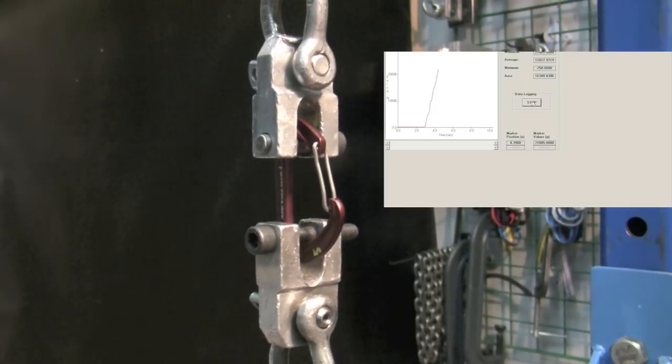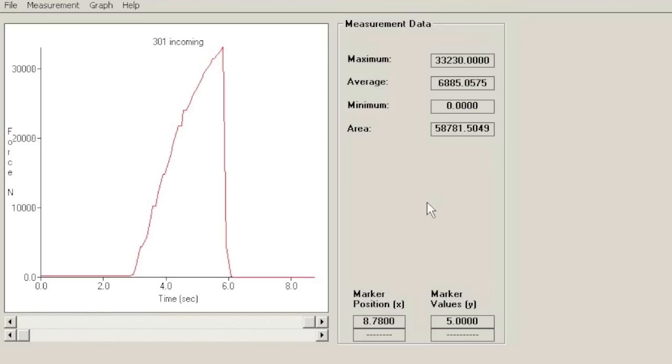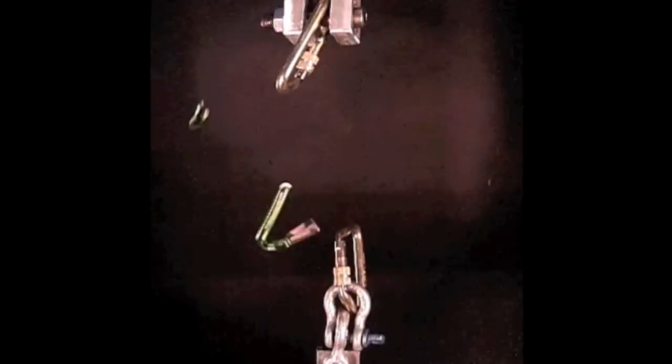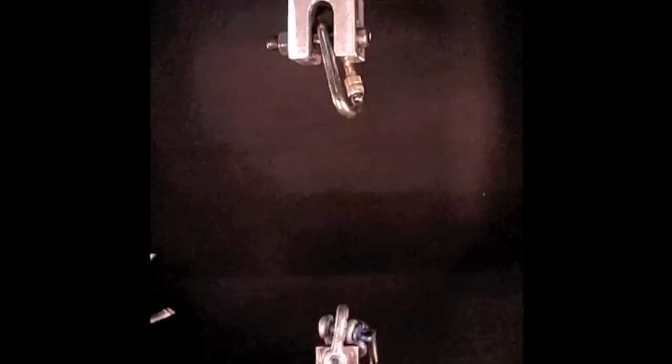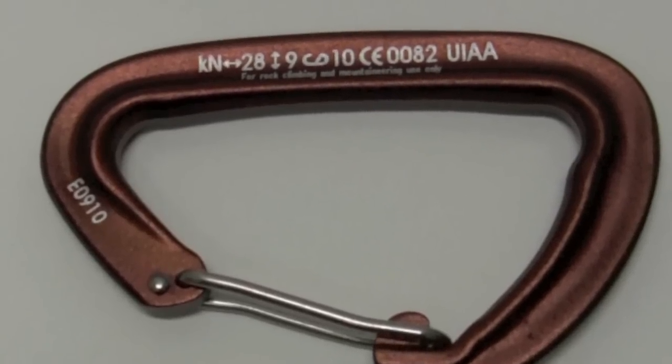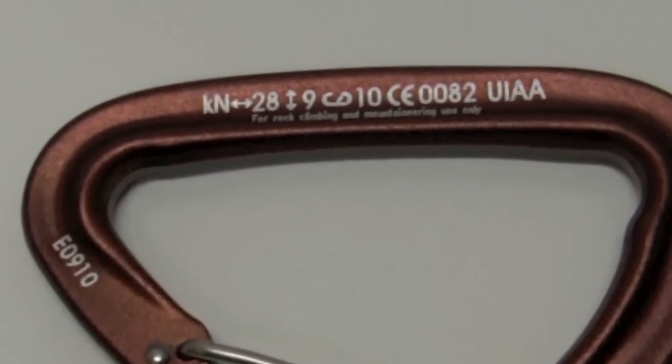Randomly selected carabiners at a sampling rate of 1 out of 200 are tested to failure in the major axis, minor axis, and open gate orientation based on CE and UIAA requirements.